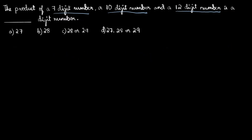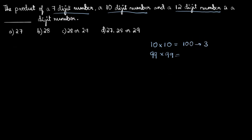To understand whether the digit count is fixed or varies, let's look at two-digit numbers. The smallest two-digit number is 10 and the largest is 99. Taking the product of the two smallest: 10 times 10 is 100, which has three digits. Taking the two largest: 99 times 99 is 9801, which has four digits. So the product of numbers with the same digit count can vary in its own digit count.